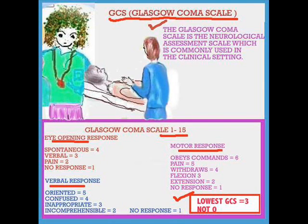You never wind up with a Glasgow Coma Scale of 0 — the lowest you can get is a 1. So if you go from eye-opening 1, verbal response 1, and motor response 1, that means you've got a total of 3. That patient is unresponsive — that's the lowest you can go. An unresponsive patient needs attention.